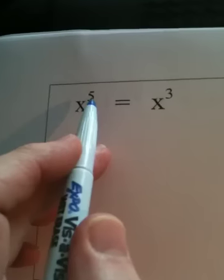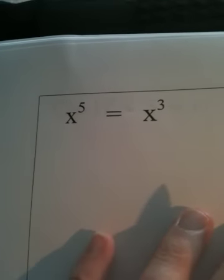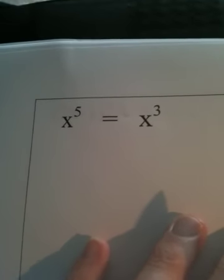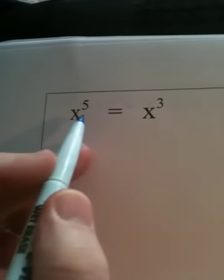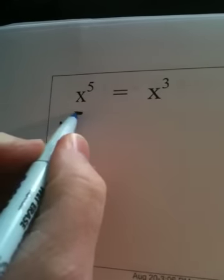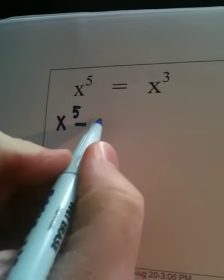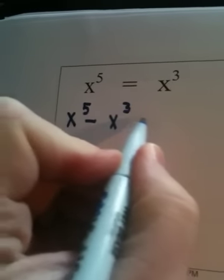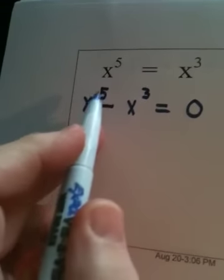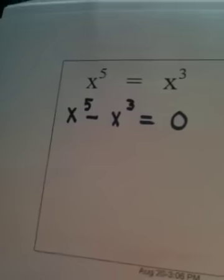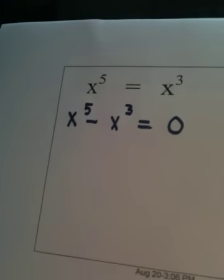This equation has degree 5. That doesn't have a particular name to it other than higher order. But when I have a higher order equation that I'm solving, my first step is to put that equation in standard form. So I'm going to write x to the 5th minus x cubed is equal to 0.